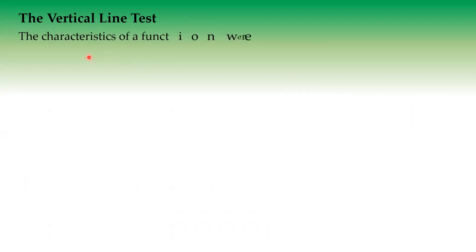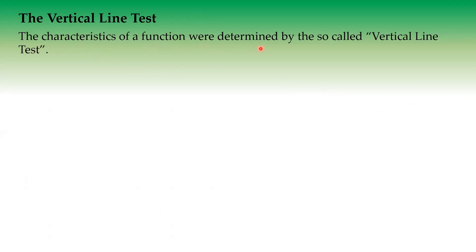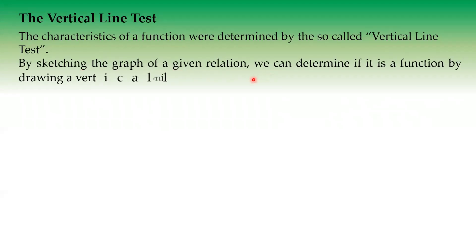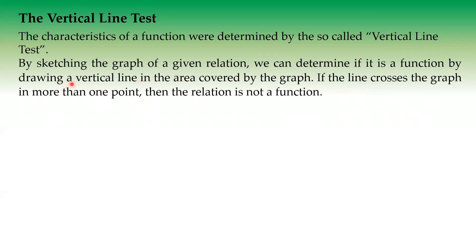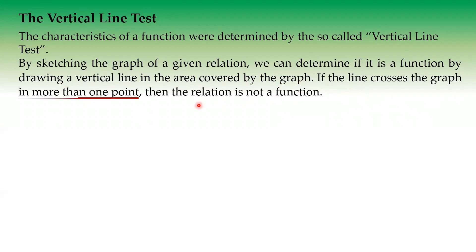Now let's proceed to the vertical line test. The characteristics of a function can be determined by the so-called vertical line test. By sketching the graph of a given relation, we can determine if it is a function or not by drawing a vertical line in the area covered by the graph. If the line crosses the graph in more than one point, the relation is not a function.